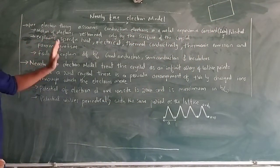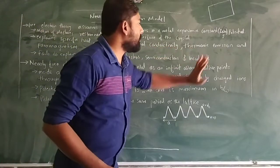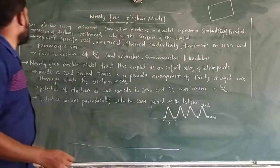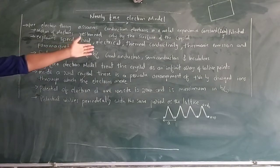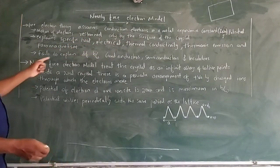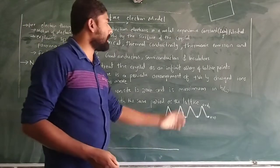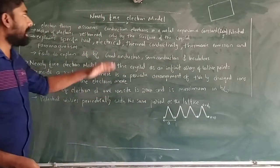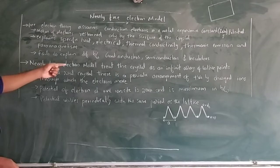The free electron model could explain specific heat, electrical and thermal conductivity, thermionic emission, and related phenomena. However, it fails to explain the difference between good conductors, semiconductors, and insulators. To address this, we introduce another theory — the nearly free electron model.